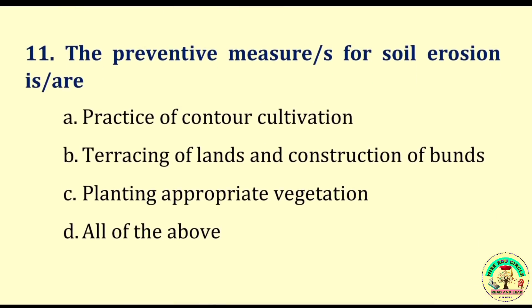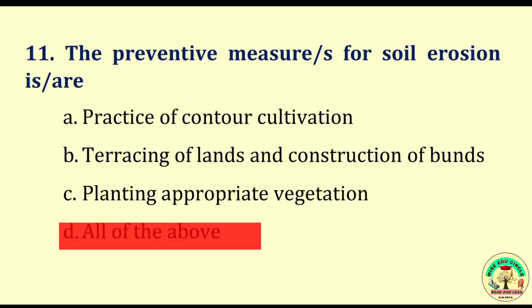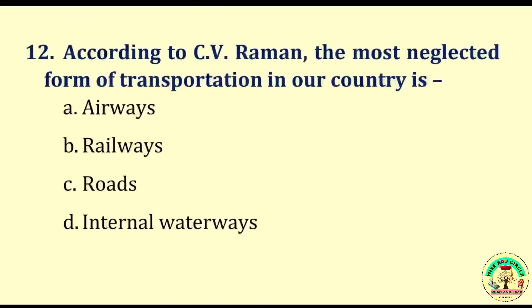Question number eleven: The preventive measure or measures for soil erosion is — practice of contour cultivation, thriving of lands and construction of bunds, planting appropriate vegetation, or all of the above. The right answer is all of the above. Question number twelve: According to CV Raman, the most neglected form of transportation in our country is — airways, railways, roads, or internal waterways. The right answer is internal waterways.